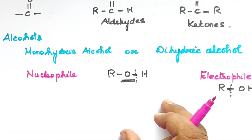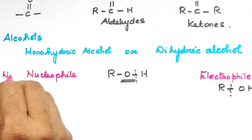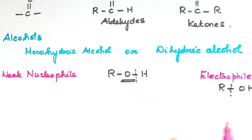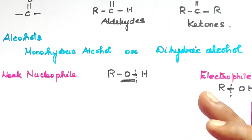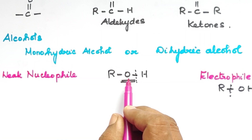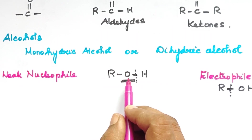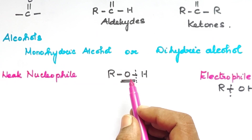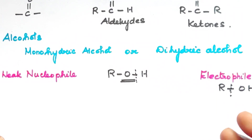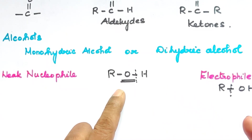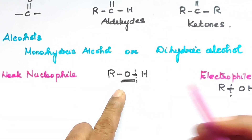Alcohols are not really good nucleophiles — they are actually weak nucleophiles. Why are they weak nucleophiles? Because oxygen is a more electronegative atom, it has an electron-withdrawing tendency. So if you act as a nucleophile you need to donate electrons, but since oxygen is more electronegative, it acts as a weak nucleophile.